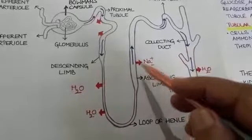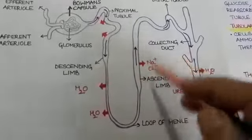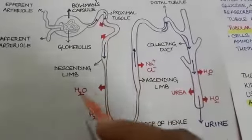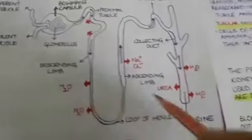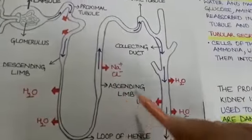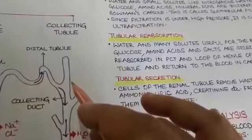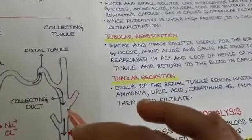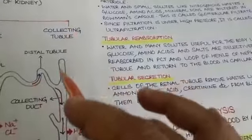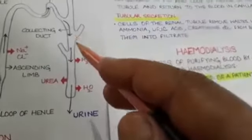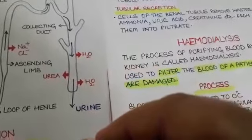In the descending limb, water is reabsorbed into the blood, and in the ascending limb, important ions like sodium ions and chloride ions are absorbed into the blood. After this, the filtrate passes into the collecting tubule and through the collecting tubule it flows into large ducts called collecting ducts, which pass the urine from the kidney into the ureter.